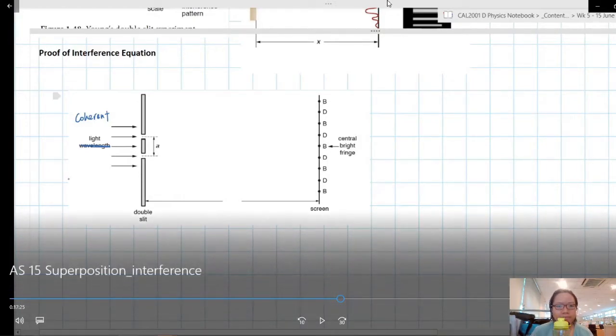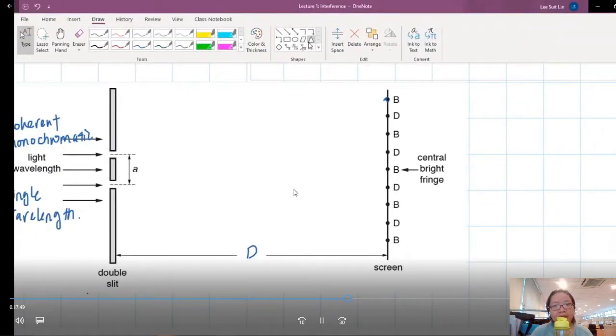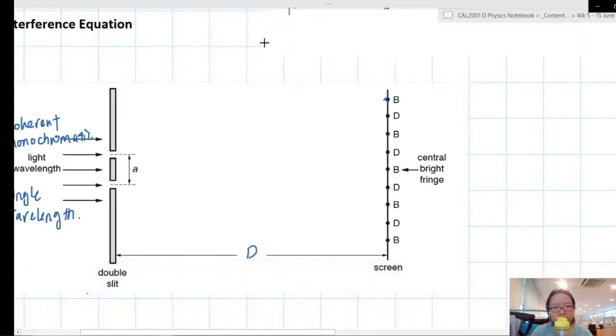So if you look at the setup given to you, you have a double slit drawn in this way, and we are going to allow coherent monochromatic light. Monochromatic here means you have a single value of wavelength or one color. And let's say we place a screen at the distance D behind the slit.